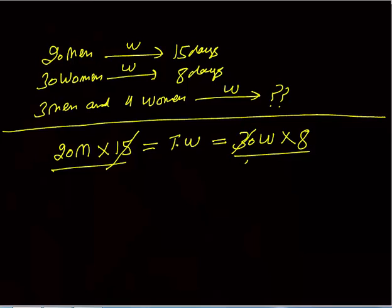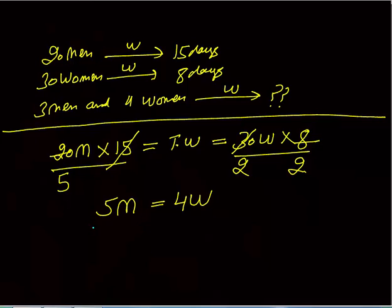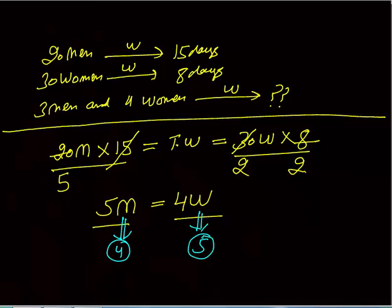From the equation twenty m into fifteen equals thirty w into eight, we simplify: fifteen over eight equals thirty w over twenty m, giving us five m equals four w. Now I need to assume values of m and w such that five m equals four w. Taking m as four: five into four is twenty. Taking w as five: four into five is also twenty. So m equals four and w equals five.